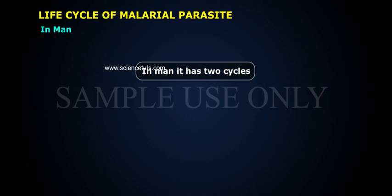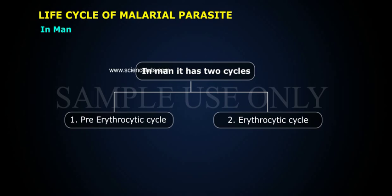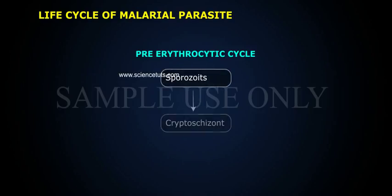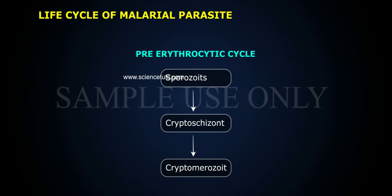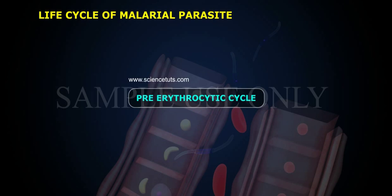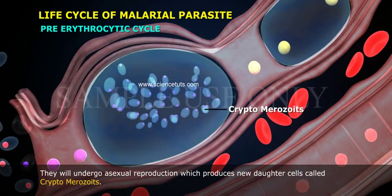In man, Plasmodium has two cycles: the pre-erythrocytic cycle and the erythrocytic cycle. In the pre-erythrocytic cycle, the sporozoites enter the liver cells and are called cryptoschizonts. They need two weeks to complete this cycle, which occurs in liver cells.